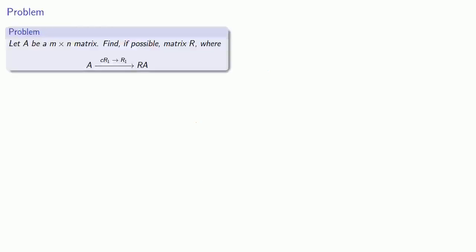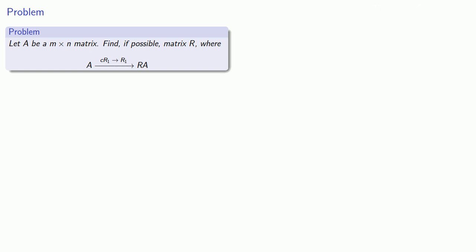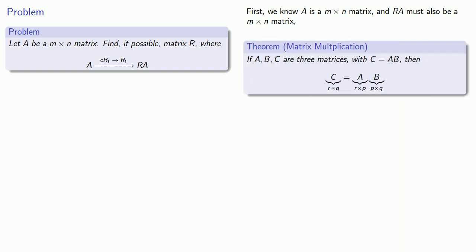Let A be an M by N matrix. Find, if possible, a matrix R that corresponds to the elementary row operation of multiplying the first row of A by some constant C. To solve this problem we need to set up a system of equations. We know A is an M by N matrix and R·A must also be an M by N matrix, so by our rules for matrix products, R must be an M by M matrix.